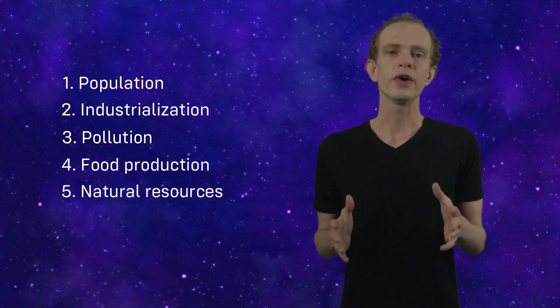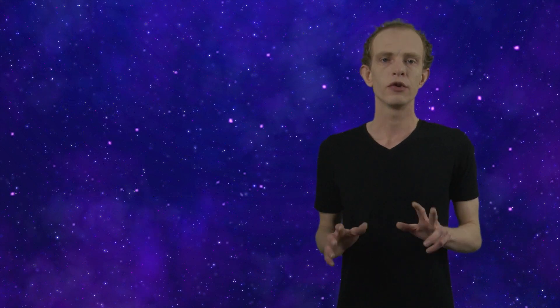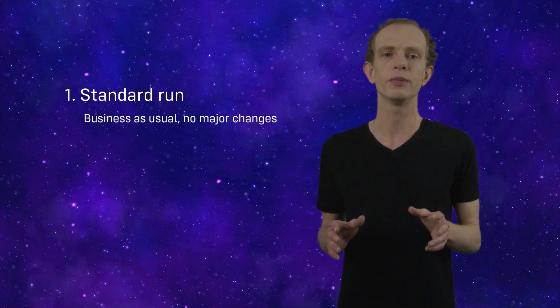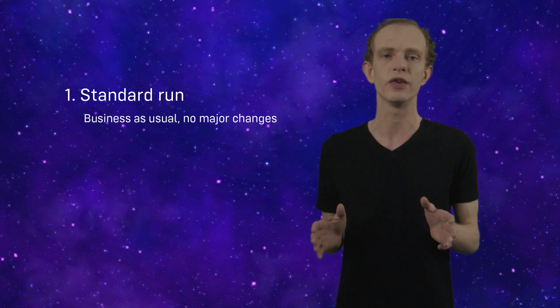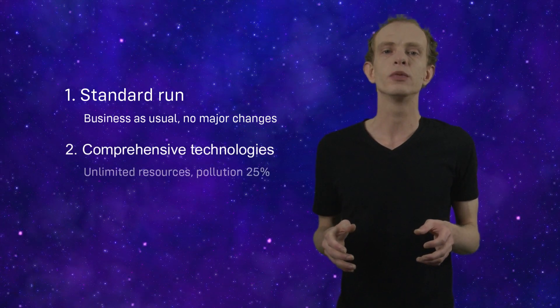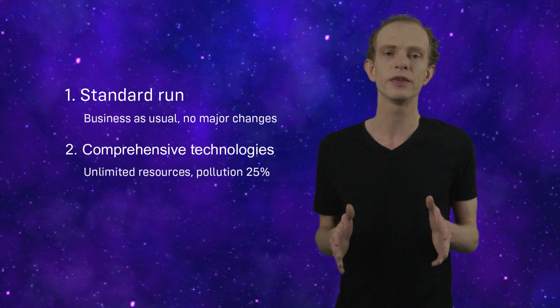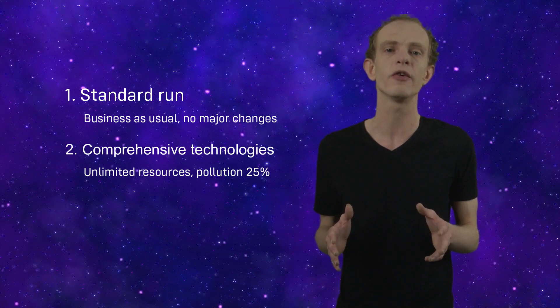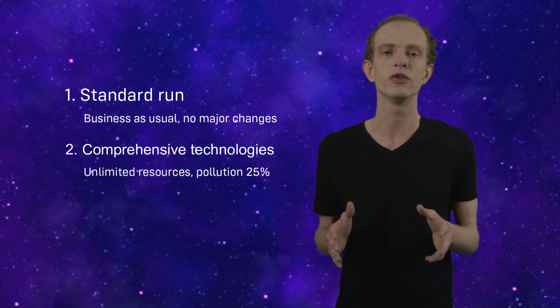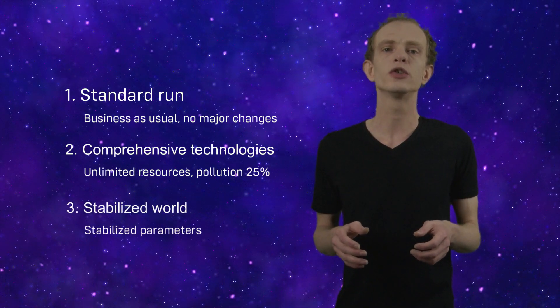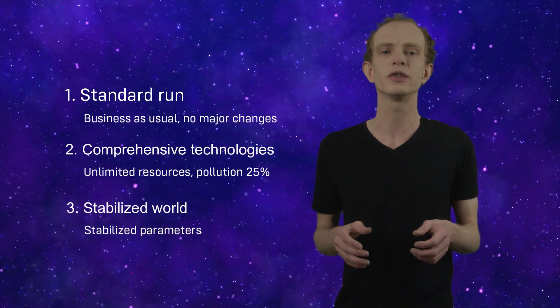The researchers varied the parameters for three different scenarios. First, the standard run scenario, which assumed no or almost no major changes compared to the period between 1900 and 1972. Second, the comprehensive technology scenario, which assumed technological advancements made resources virtually unlimited, most materials were recycled, and pollution was reduced to 25% of the 1972 value. Third, they ran the stabilized world scenario, which assumed measures had been taken to stabilize the different parameters.